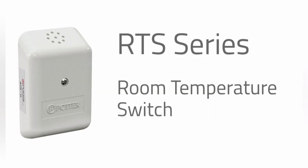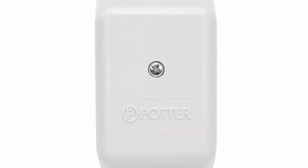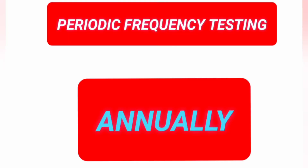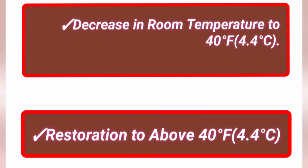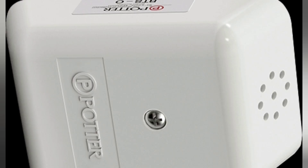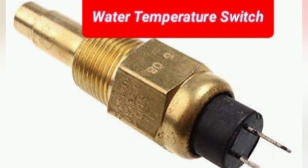First one is room temperature switch. The method of testing this switch is to operate the switch and verify receipt of signal to indicate the decrease in room temperature to 40 degree Fahrenheit and its restoration to above 40 degree Fahrenheit.